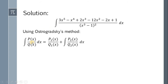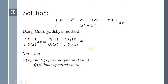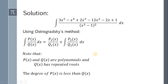Our solution involves the Ostrogradsky method. So we have the integral of P of x all over Q of x dx is equal to P sub 1 of x all over Q sub 1 of x plus the integral of P sub 2 of x all over Q sub 2 of x dx. Wherein P of x and Q of x are polynomials and Q of x has repeated roots. Also, the degree of P of x is less than the degree of Q of x. In short, P of x all over Q of x is a proper fraction.